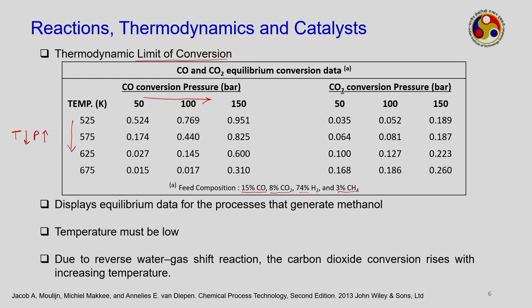For CO2 conversion, the behavior is the opposite — it increases with higher temperature — but increasing pressure also increases CO2 conversion. This is primarily due to the reverse water-gas shift reaction. The conclusion is that the process must be conducted at lower temperature and higher pressure, which is why the initially developed methanol processes were high-pressure processes.